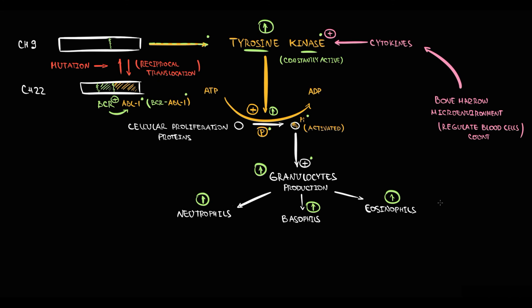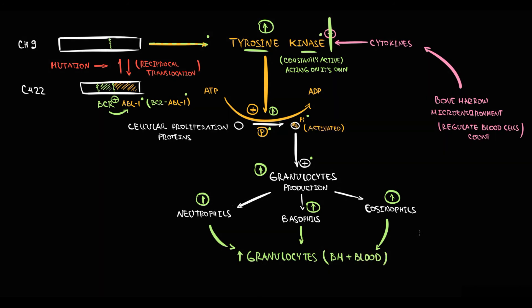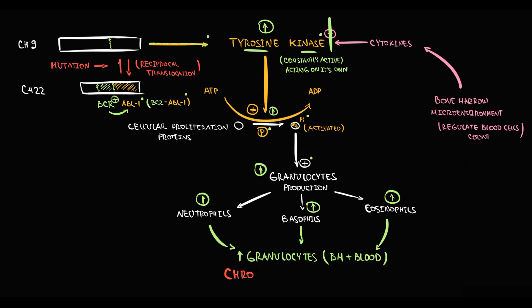So if in normal conditions tyrosine kinase is active only when the bone marrow microenvironment sends a signal via cytokines, now tyrosine kinase is acting on its own — basically brainlessly. With constantly active tyrosine kinase, we now have constant proliferation of granulocytes, so the amount of granulocytes in the bone marrow and thereby in the blood will progressively increase. Exactly this overproduction with progressive accumulation of granulocytes in the blood is called chronic myeloid leukemia, and chromosome 22 formed by this pathological reciprocal translocation carrying the BCR-ABL1 gene is called the Philadelphia chromosome.